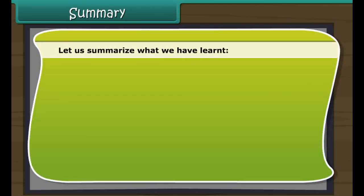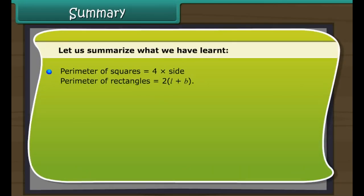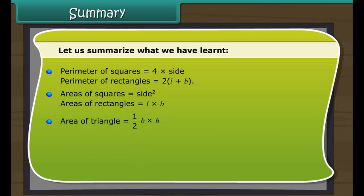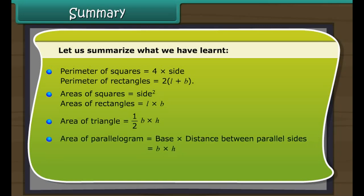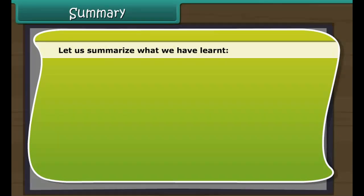Let us summarize what we have learned: perimeter of squares and rectangles, areas of squares and rectangles, area of a triangle, area of a parallelogram, and circumference and area of a circle.